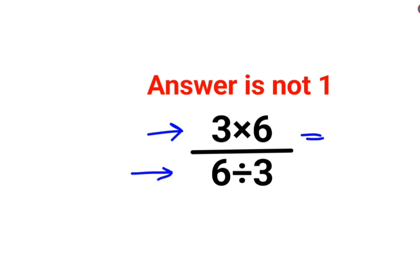So in this case, what you have to do is, we have to treat them separately. So this is 3 multiplied by 6, that is 18, and we have 6 divided by 3, that is 2.